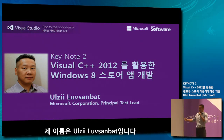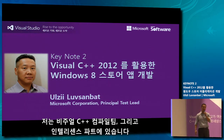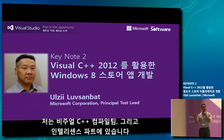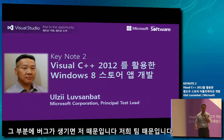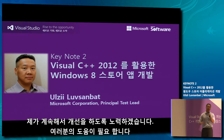My name is Ulzi Lovesambat. I work in the Visual C++ compiler team as well as the IntelliSense team. I am a principal test lead, in charge of the quality of the C++ compiler and the IntelliSense parser. So if you ever hated that feature or found bugs, it's because of me or my team. We will continue to make it better going forward with your help.